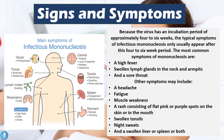Because the virus has an incubation period of approximately four to six weeks, the typical signs and symptoms of infectious mononucleosis usually only appear after this four to six week period. The most common symptoms are a high fever, swollen lymph glands in the neck and the armpits, and a sore throat.